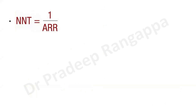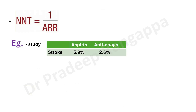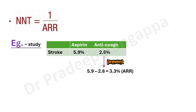NNT is simply 1 divided by absolute risk reduction (ARR). In another example comparing aspirin versus anticoagulation: stroke rates are 5.9% with aspirin and 2.6% with anticoagulation. The ARR is 5.9 minus 2.6 = 3.3%. NNT = 1 divided by 3.3%, which equals 100 divided by 3.3, giving NNT of approximately 30. First calculate ARR between groups, then divide 1 by that percentage.